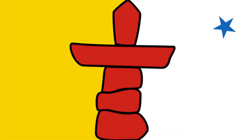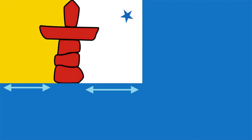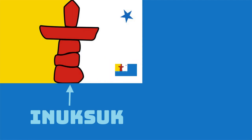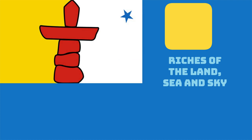The official flag of Nunavut was proclaimed on April 1st, 1999, along with the territory itself. The flag consists of gold and white fields divided vertically, featuring a red Inuksuk with a blue star in the upper fly. The colors blue and gold were selected to represent the riches of the land, sea, and sky.